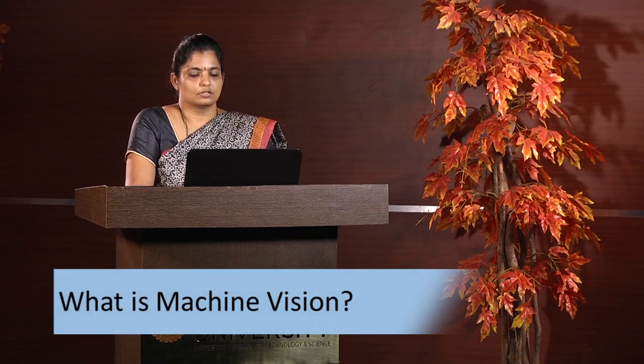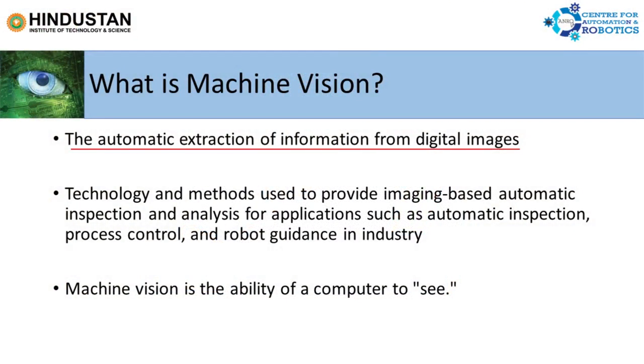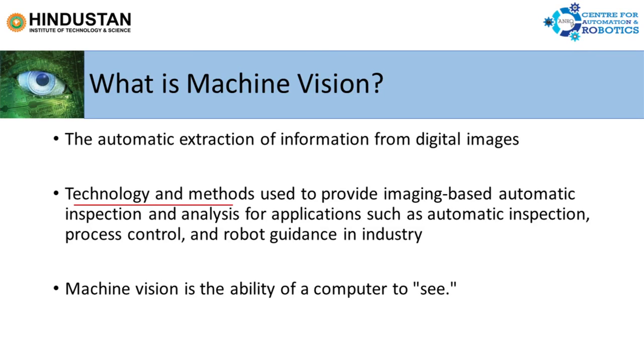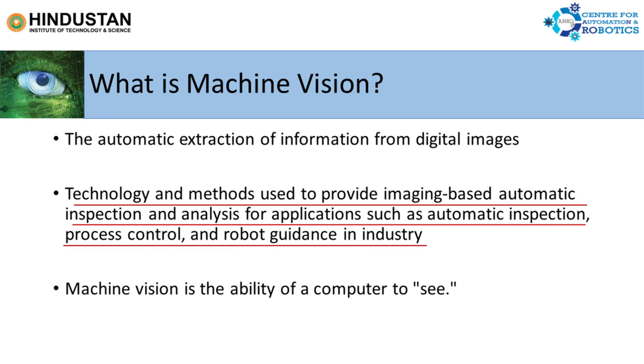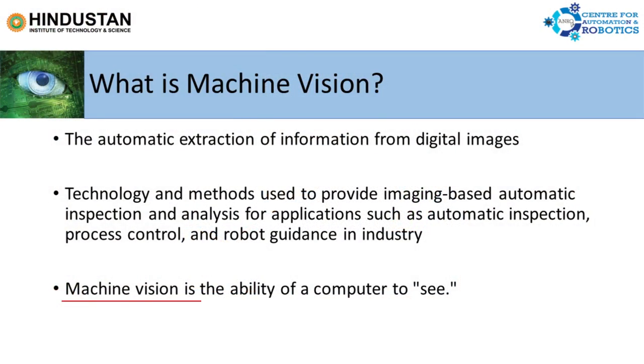To start with, what is machine vision? We could define it to be a field where you can automatically extract information from digital images. It is a field where we have technology and methods used to provide imaging-based automatic inspection and analysis for applications such as automatic inspection, process control, and robot guidance in industry. To be very precise, machine vision is the ability of a computer or a machine to see. As a human being, if we are able to decide on something based upon our vision, and we need to transform this technique to a machine, we call it machine vision, wherein decision making is done based on the images acquired by a machine.